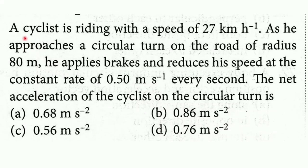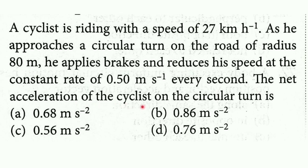Yes guys, we came to the next MCQ of today's session. I will read it out: A cyclist is riding with a speed of 27 km per hour. As he approaches a circular turn on the road of radius 80 meters, he applies brakes and reduces his speed at the constant rate of 0.5 meter per second every second. The net acceleration of the cyclist on the circular turn is?